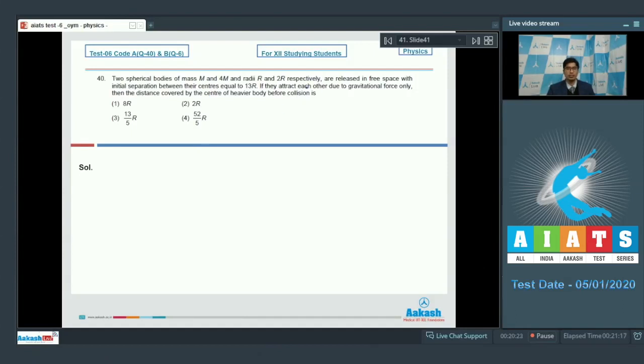Dear students, in this case, since they are moving under the influence of gravitational force only, the center of mass remains at rest. The total distance that would be covered by the bodies would be 13r that is the initial separation minus the summation of radii which will be 10r. If the distance covered by the 4m mass is d1, then the distance covered by the m mass will be 10r minus d1. Now, dear students, since the center of mass has a zero displacement, we can write down that d1 would be equal to 2r and hence option number 2 is the correct answer.